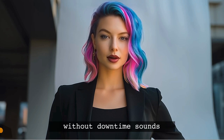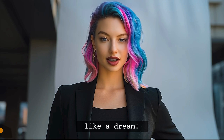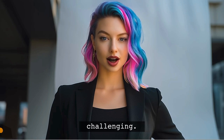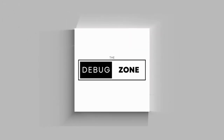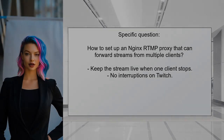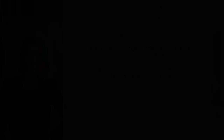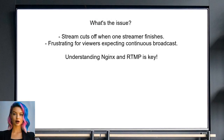The idea of having multiple streamers on the same channel without any downtime sounds like a dream, but figuring out how to keep that stream live while switching between different sources can be quite the challenge. One user asked how to set up an NGINX RTMP proxy that can forward streams from multiple clients without interrupting the Twitch broadcast. When one streamer finishes their session, the stream typically cuts off for a few minutes, which can be frustrating for viewers who expect a continuous broadcast.